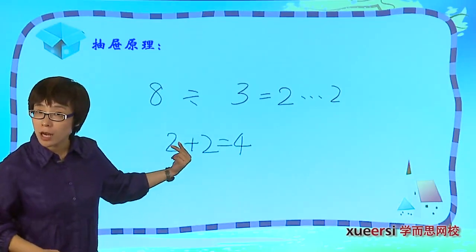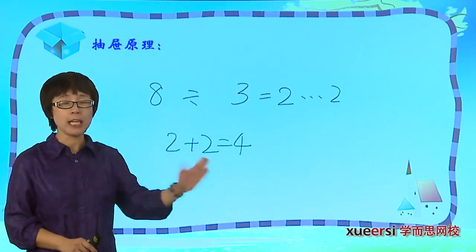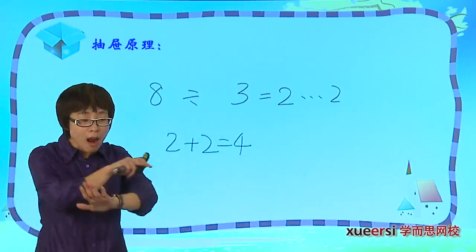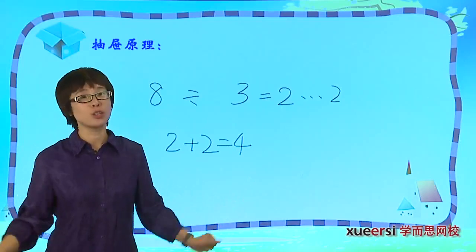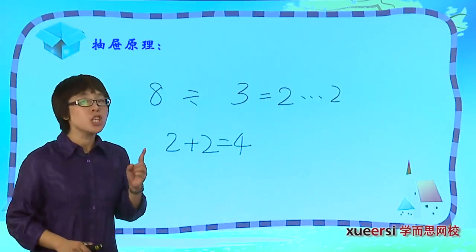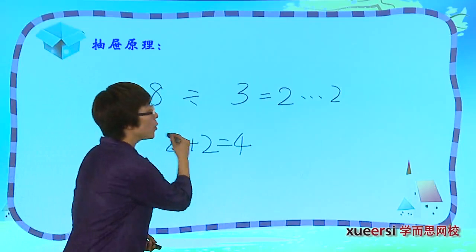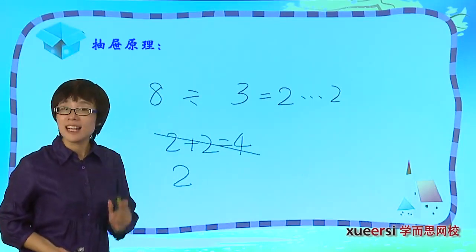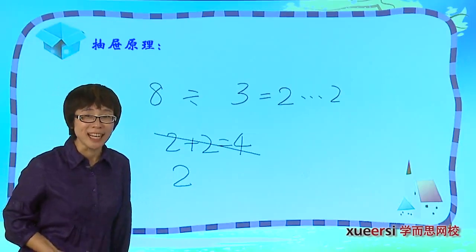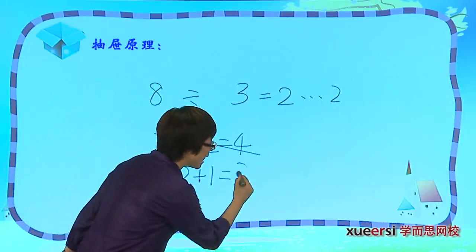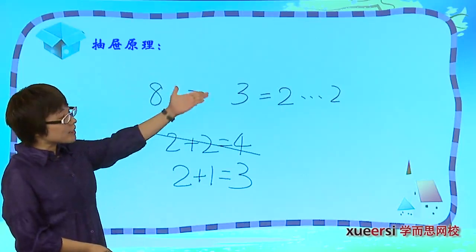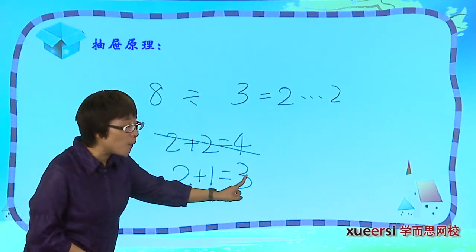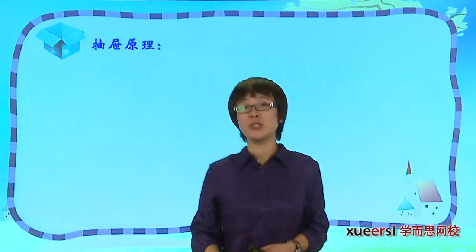也就是说明，虽然余的是二，可是这二有可能平分的。所以对于我们来讲，你能保证的就是有一个抽屉里会比二要多，但是你只能保证它多一个。所以八个苹果放到三个抽屉里能够保证的就是会有一个抽屉里有三个苹果。